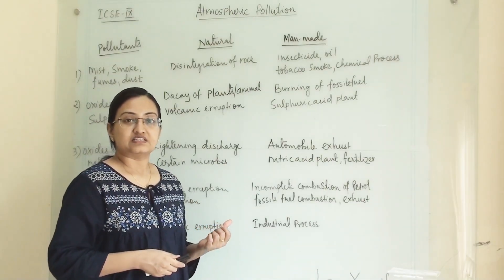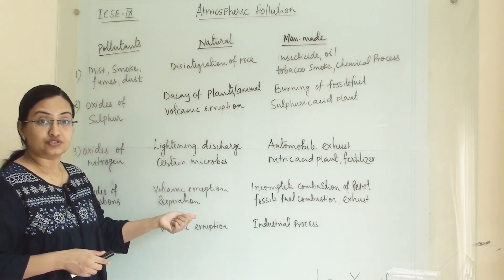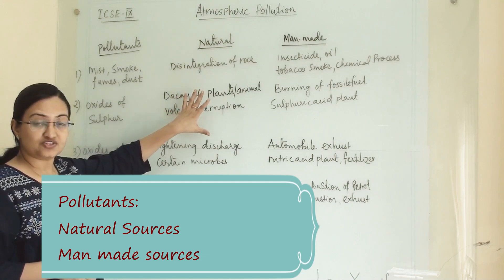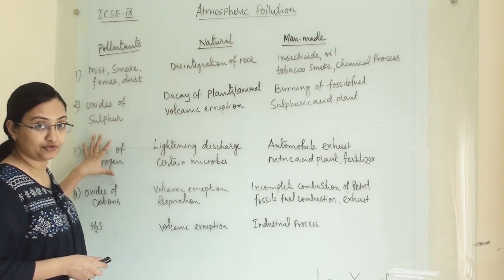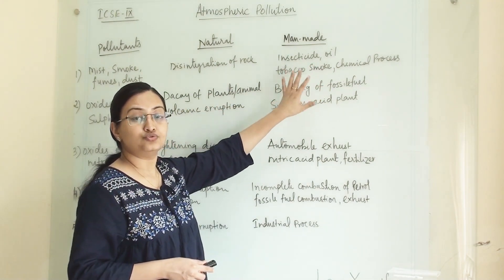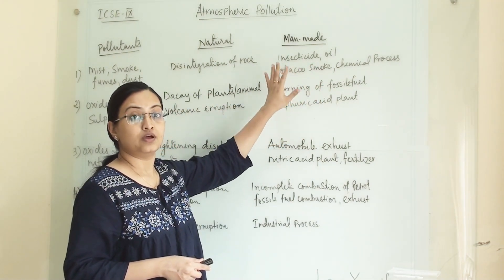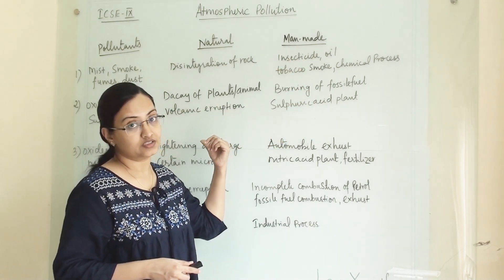Now we will discuss the pollutants and the pollutant sources. Natural source means natural activity and natural processes will emit these pollutants, and manmade sources means due to human activity these pollutants are generating in the atmosphere.